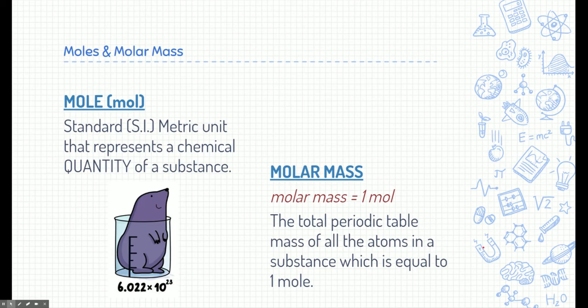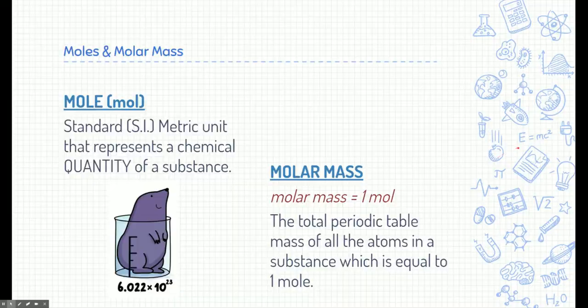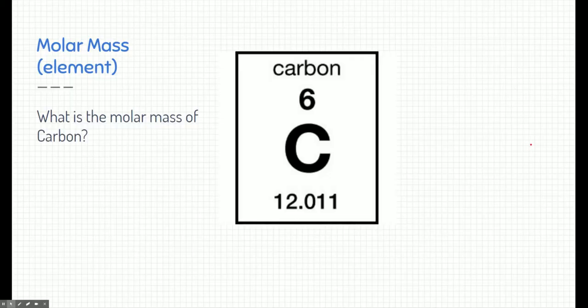A molar mass is also important to know. It's how we figure out whether we have a mole or not. The molar mass is equal to one mole. So when we have a mole, we can find a mole if we know the molar mass of a substance. The molar mass is just the total periodic table mass of all the atoms in a substance, and that equals one mole.